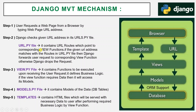The views layer has its own views.py file. It contains functions to be executed upon receiving the user request. The views layer is responsible for executing the associated functions upon receiving the request from the browser. It defines the business logic, and if the view function requires data, it will access the models.